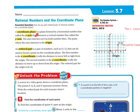A coordinate plane is a plane formed by a horizontal number line called the x-axis — here is my x-axis — that intersects with a vertical number line called the y-axis. This is where they intersect. The axes intersect at zero on both number lines, right there. The point where the axes intersect is the origin.